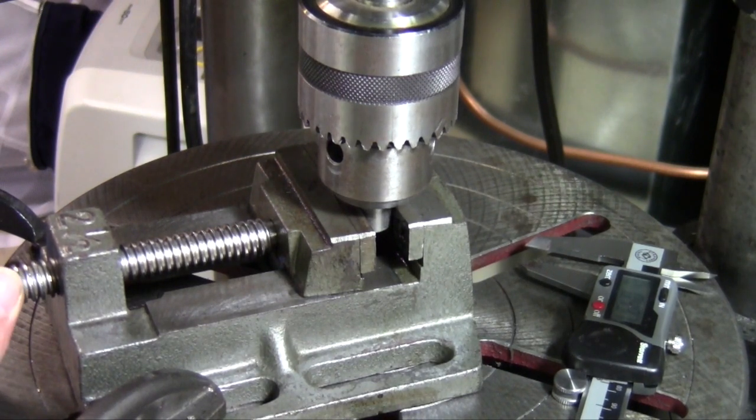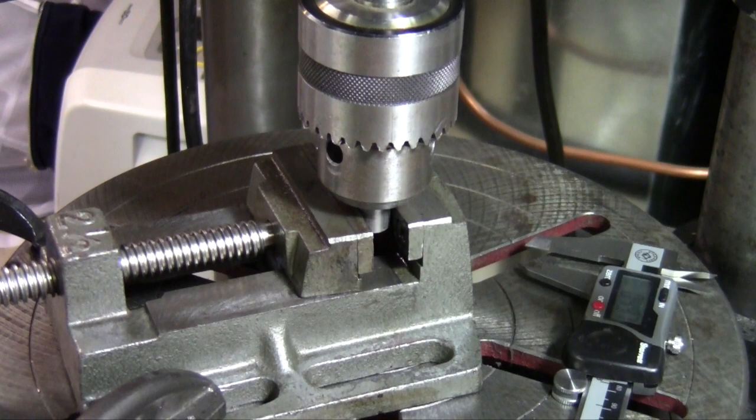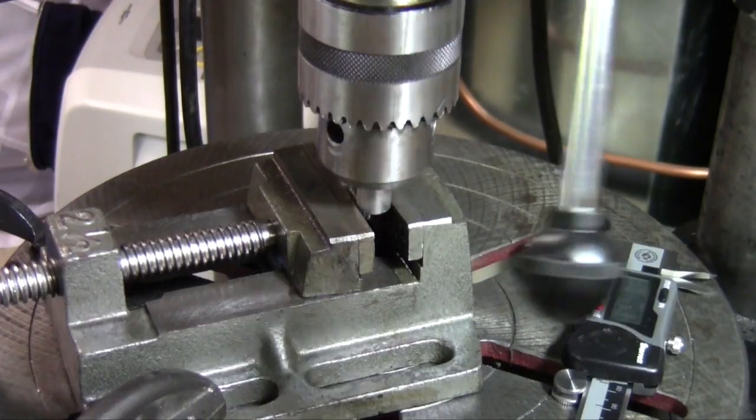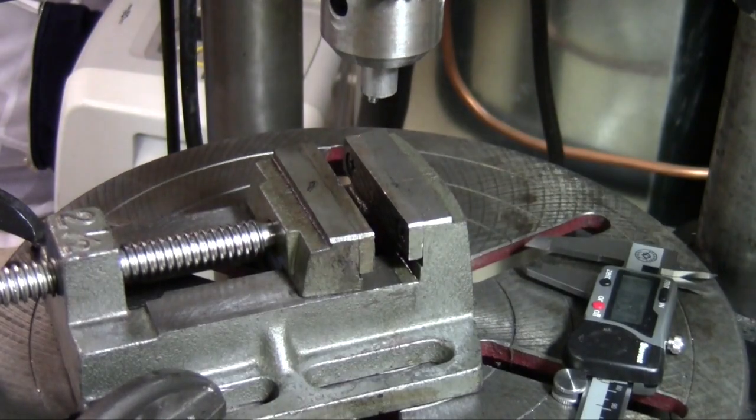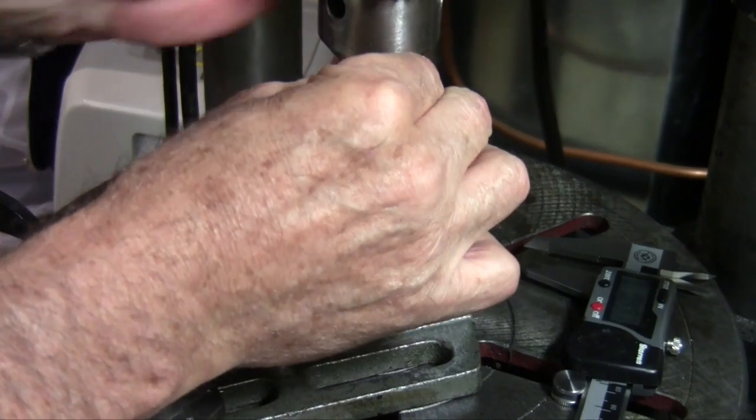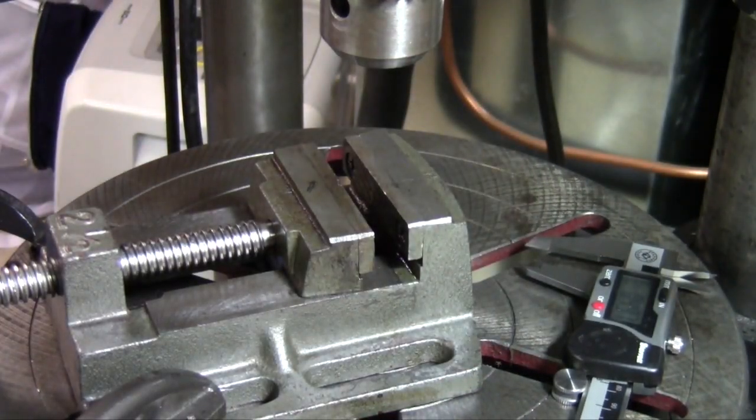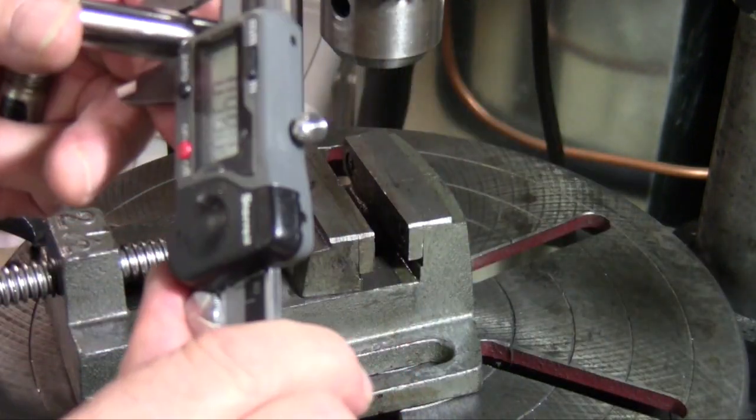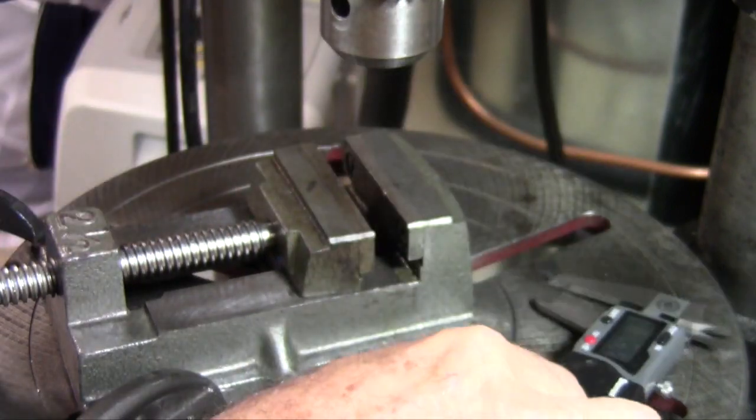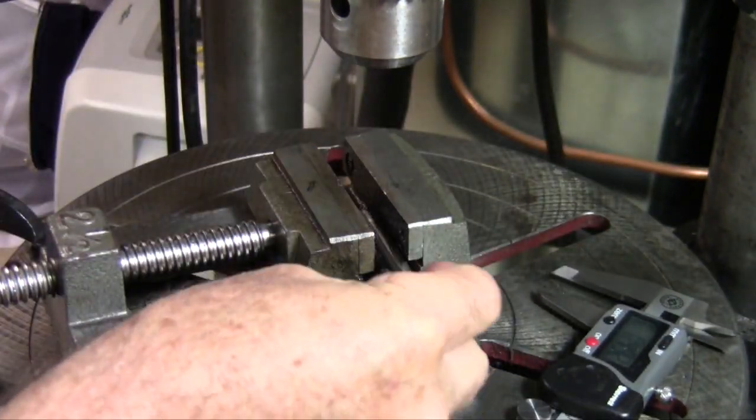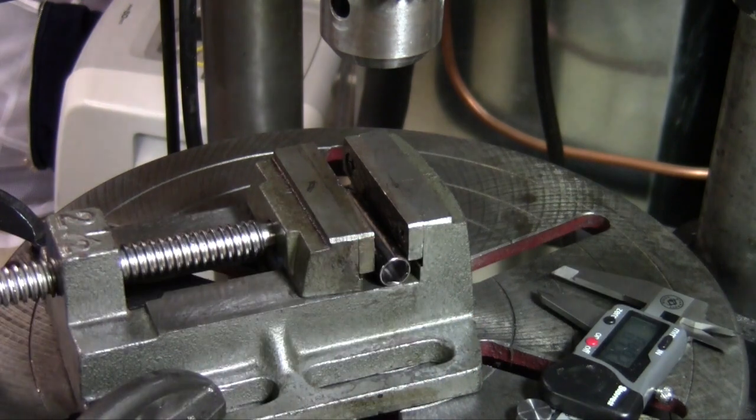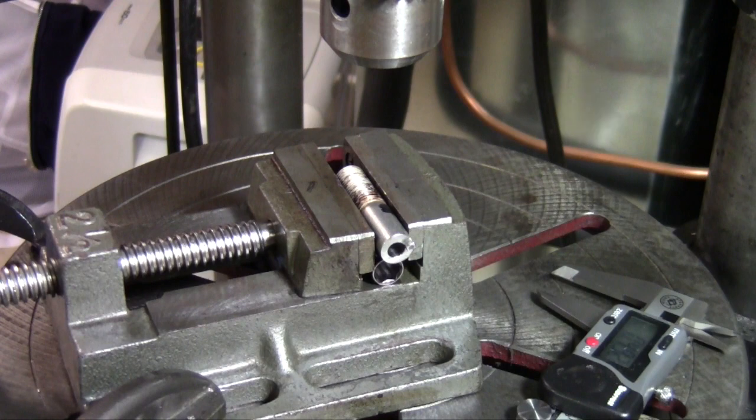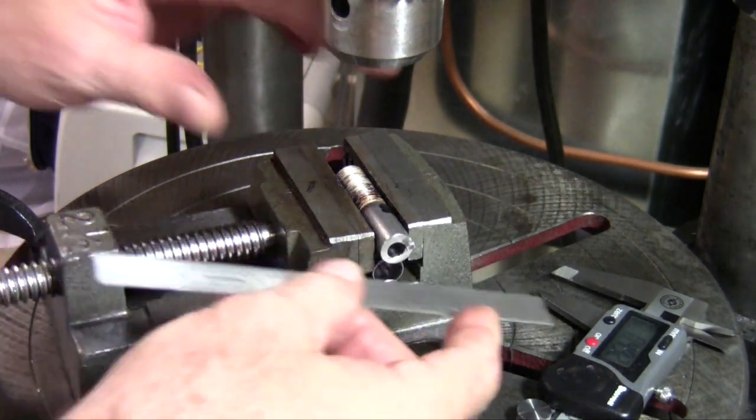I can loosen up my vise and raise the quill back up, take my part out. Next I'm going to use a deep well socket. It's under a half an inch, so I'm just using it to hold the barrel up towards the top of the vise.